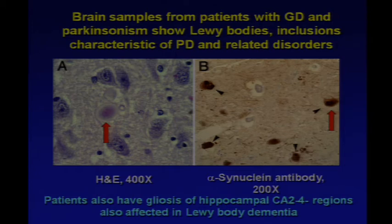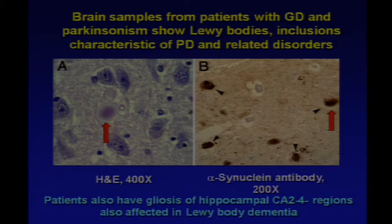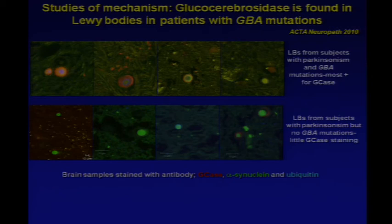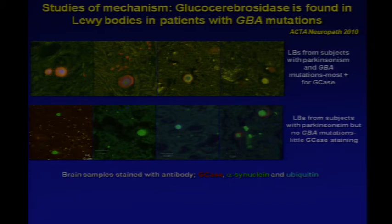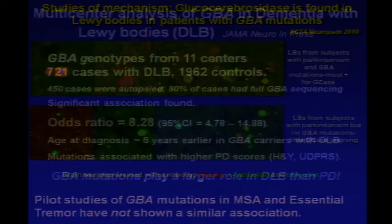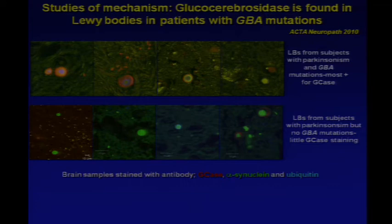We've also performed neuropathologic assessments — the first patient I showed in the video was the first autopsy we were able to get done at NIH. These patients do have Lewy bodies staining positive for alpha-synuclein as expected, and also show gliosis of hippocampal layers CA2 to CA4, which are regions also affected in some Lewy body disorders. Using immunohistochemistry on brain samples, we stained tissue with antibody to glucocerebrosidase (appearing red) and alpha-synuclein (green). In Parkinson patients with glucocerebrosidase mutations, Lewy bodies stained positive for both alpha-synuclein and glucocerebrosidase. In Parkinson patients without mutations, we saw very little glucocerebrosidase staining in Lewy bodies — an important clue for exploring pathogenesis.